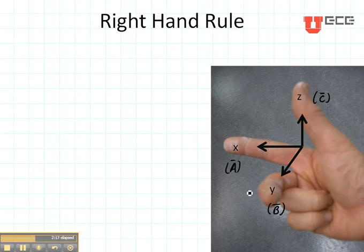If we take A and we cross it with B to equal C, A represents your first finger, B represents your middle finger, and Z represents the top finger.